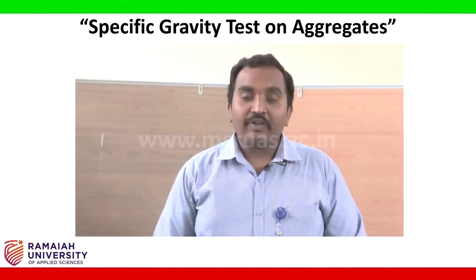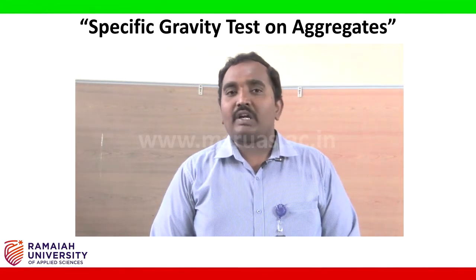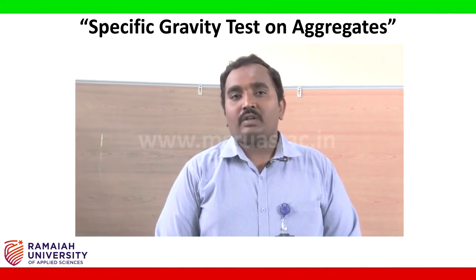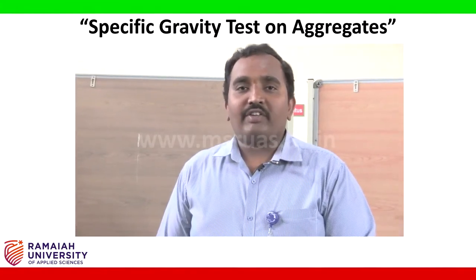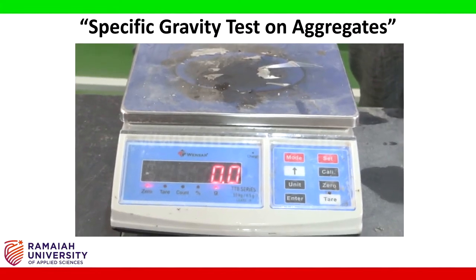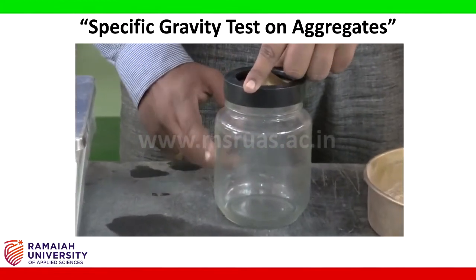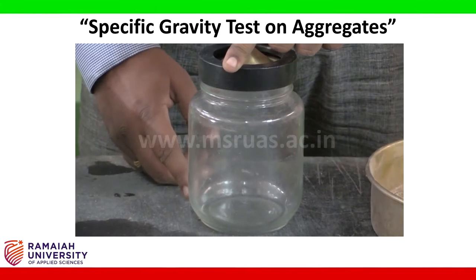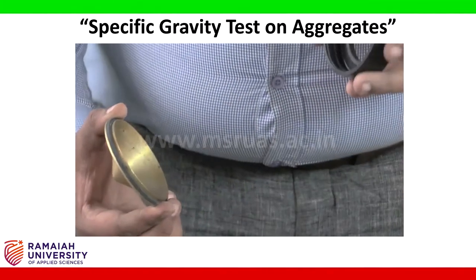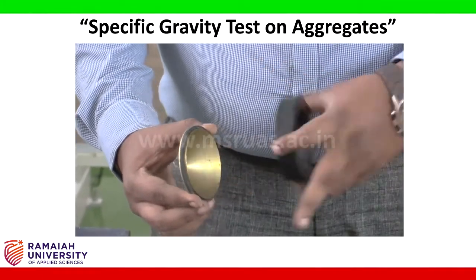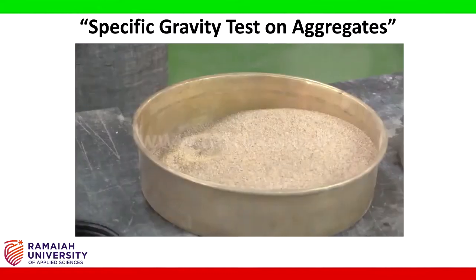Now we are doing the specific gravity of fine aggregates. Specific gravity is defined as the ratio of the weight of any material to the weight of an equal volume of a standard material. The apparatus required is an electronic weighing balance of one gram accuracy and a pycnometer — generally used to determine the specific gravity of finer material. This pycnometer has three parts: a brass conical shape along with a rubber seal, a jar, and a collar cap.